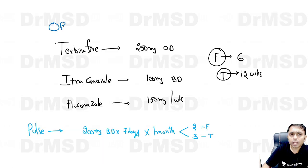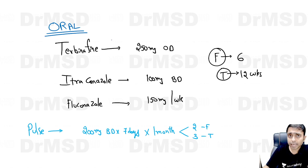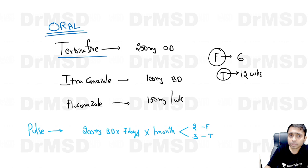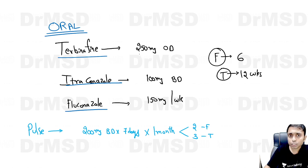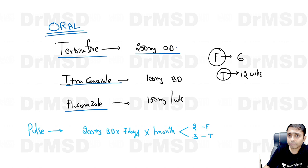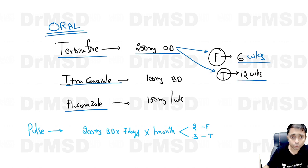Coming to the oral medications — please remember that topical nail lacquer alone will not be sufficient to treat onychomycosis; we need to give oral agents as well. The oral agents are Terbinafine, Itraconazole, and Fluconazole. Terbinafine dosage, if given as continuous medication, is 250 mg once a day. For fingernails the duration is 6 weeks, whereas for toenails the duration is 12 weeks.